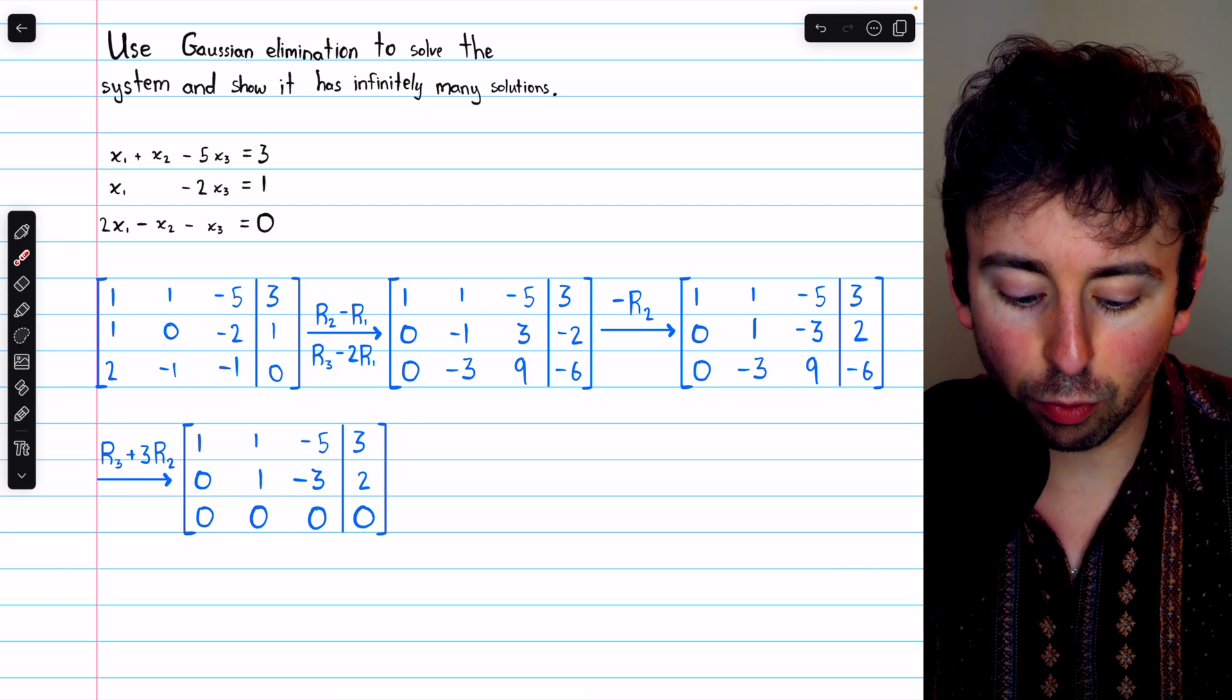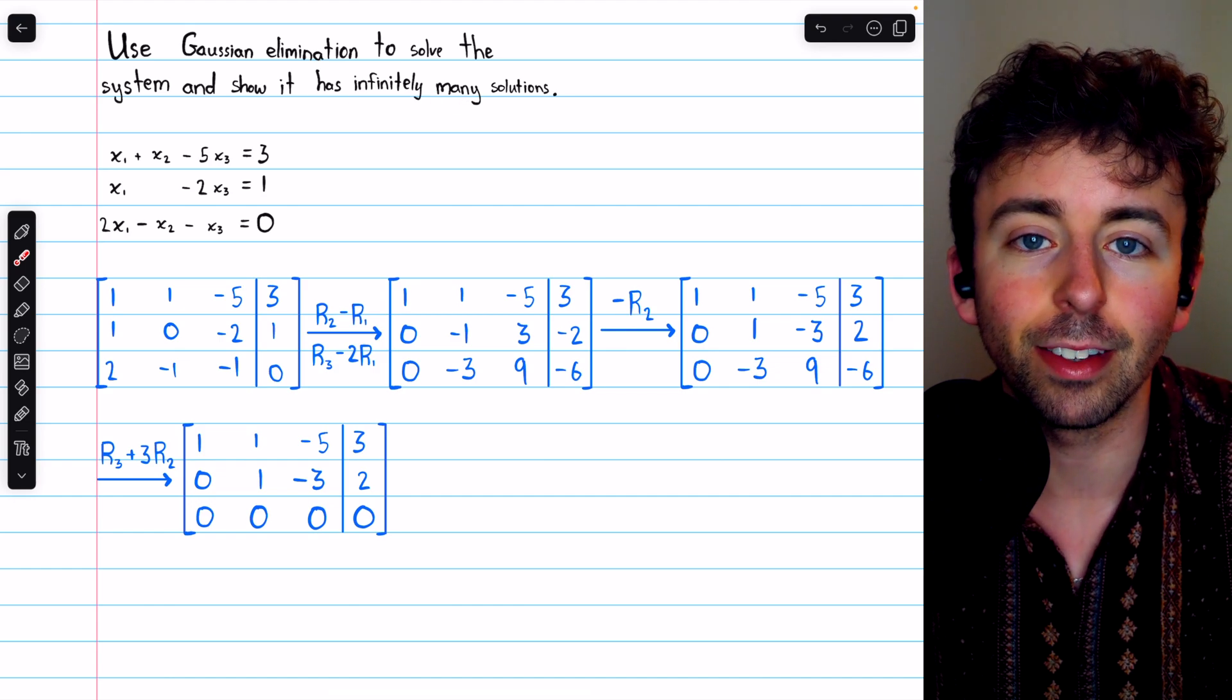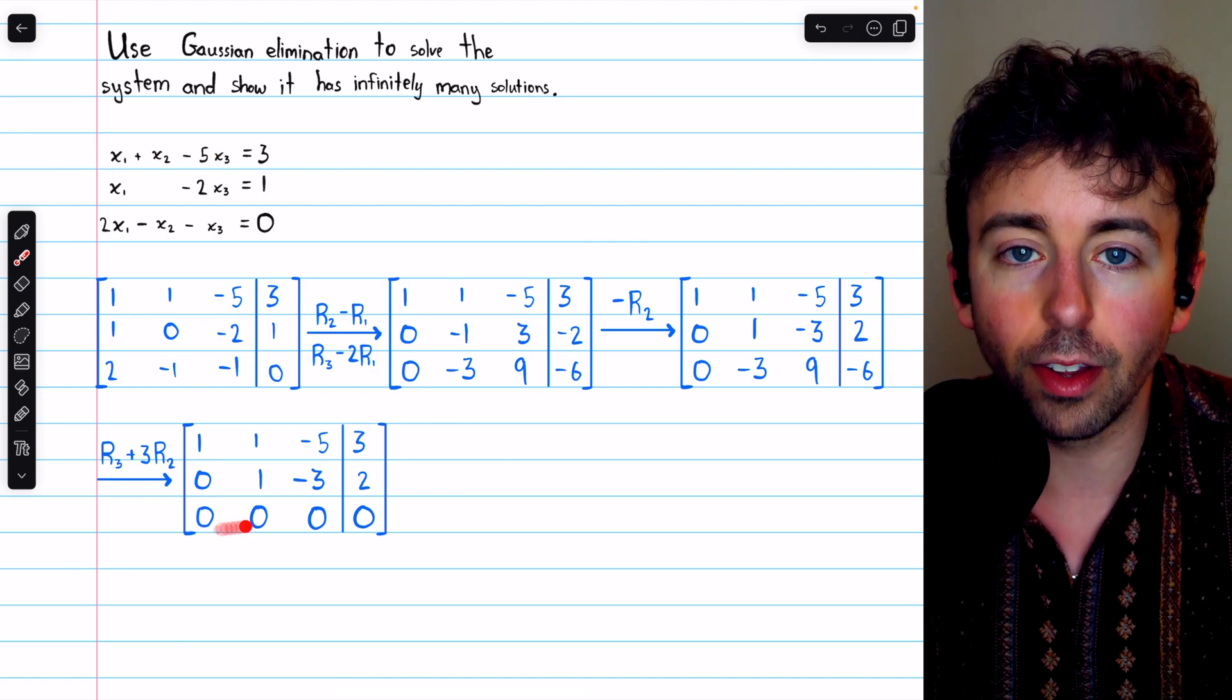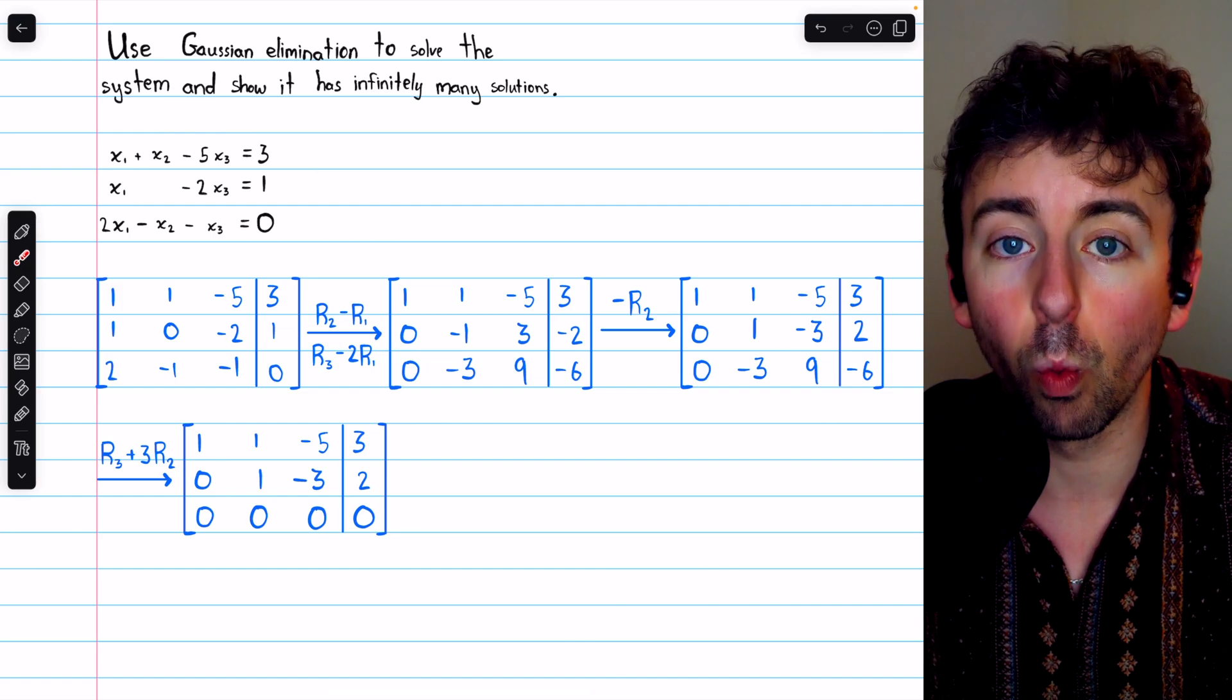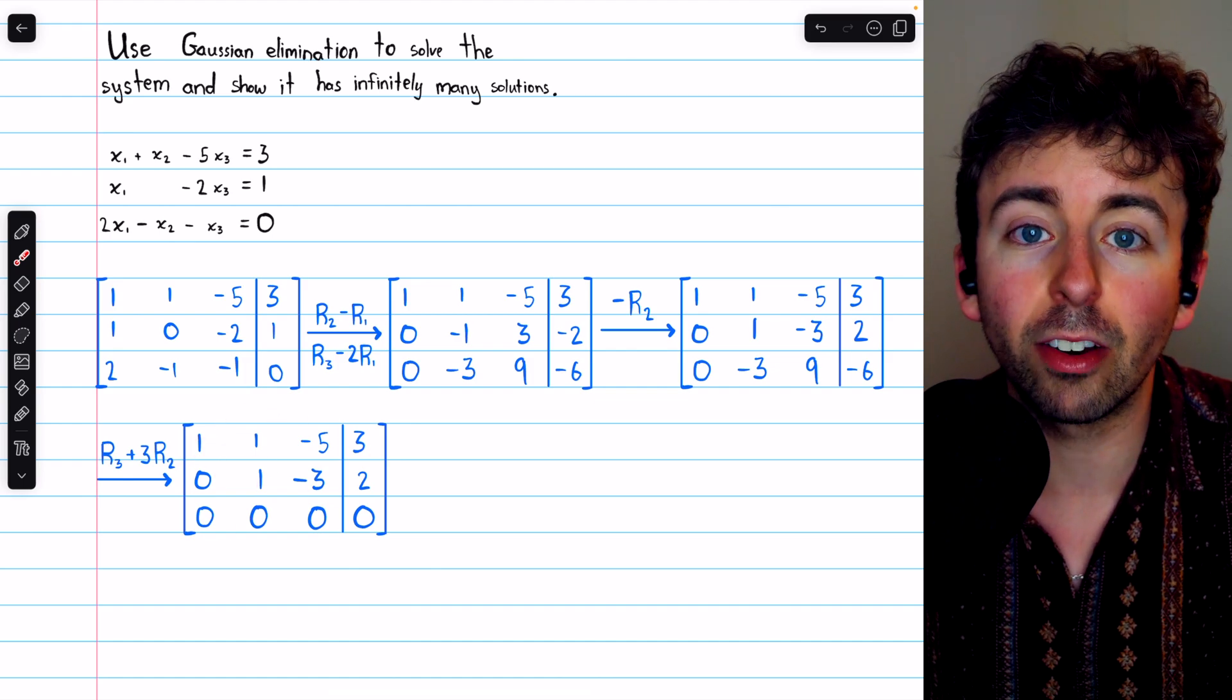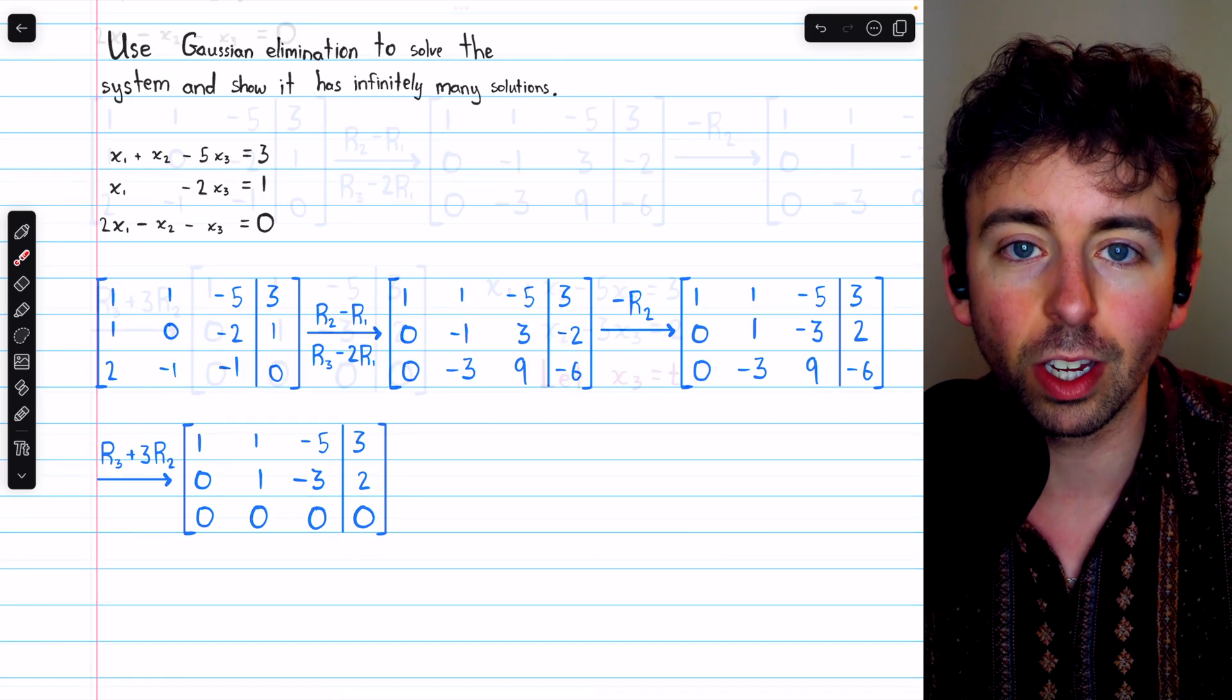Now, having this row of zeros shouldn't be surprising since we were anticipating infinitely many solutions. Since we have three unknowns, if we had three non-zero rows, that would be enough to determine exactly one solution. But since we don't have three non-zero rows, we only have two, we'll actually have a free variable, and hence we'll see there are infinitely many solutions.